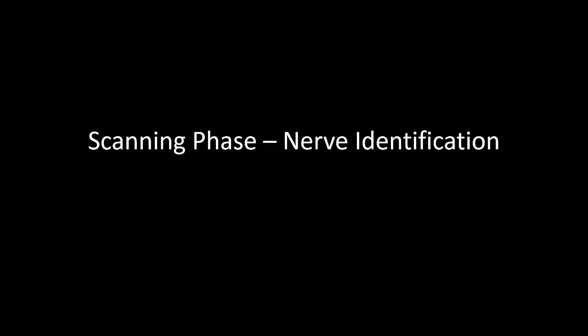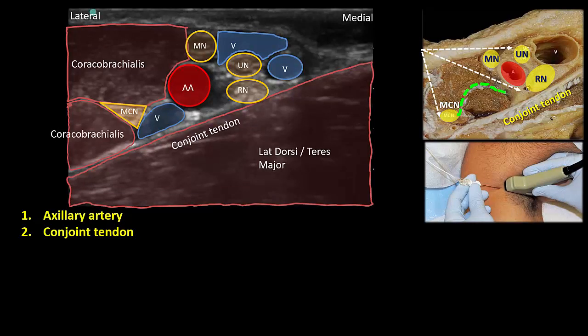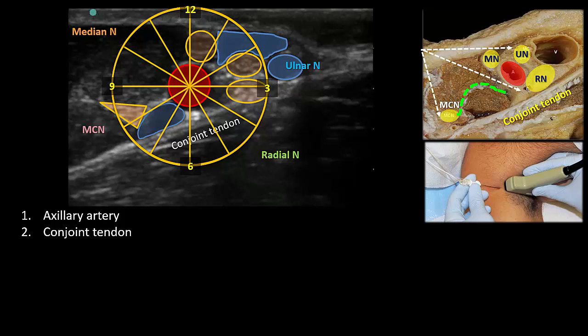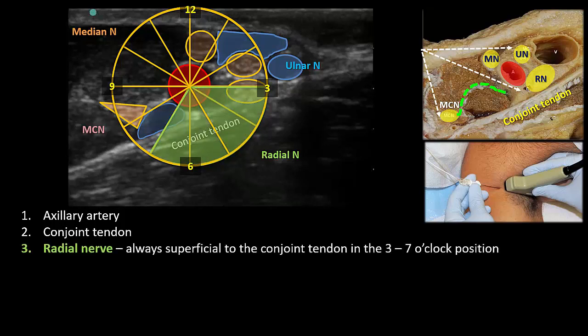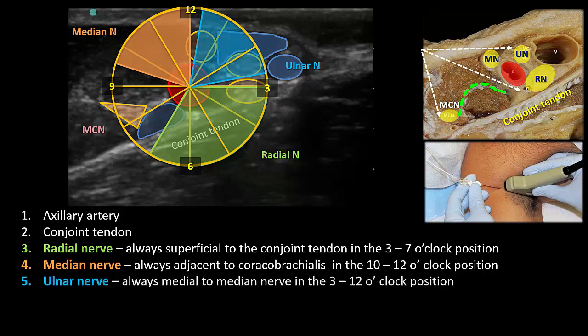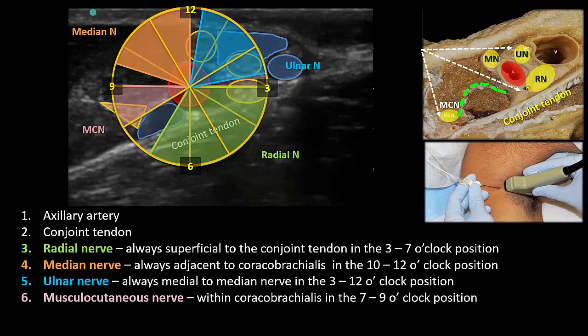Let's start with tips on how to confidently identify the main terminal nerves. As discussed in the first video, the key landmarks are the axillary artery and conjoined tendon. The radial, median, and ulnar nerves are clustered around the artery in characteristic locations. The radial nerve is always lying on the conjoined tendon in the 3 to 7 o'clock position. The median nerve is usually in the 10 to 12 o'clock position adjacent to the coracobrachialis muscle, and the ulnar nerve is next to the median nerve in the 3 to 12 o'clock position. The musculocutaneous nerve is in the 7 to 9 o'clock position, usually within the coracobrachialis muscle.